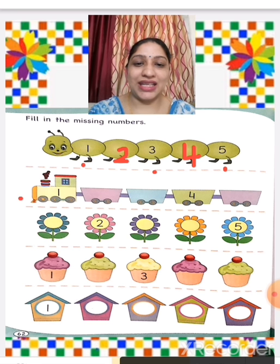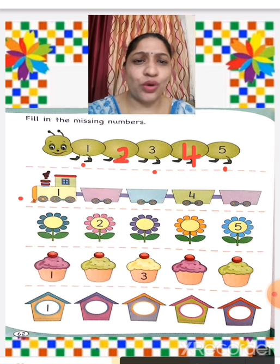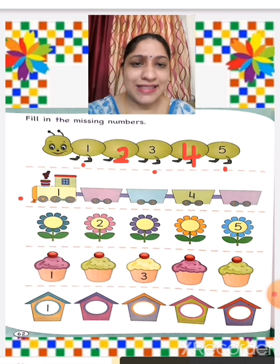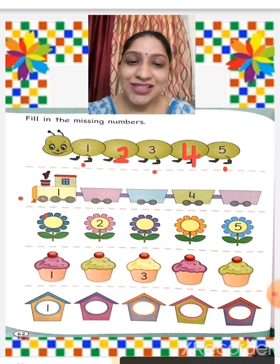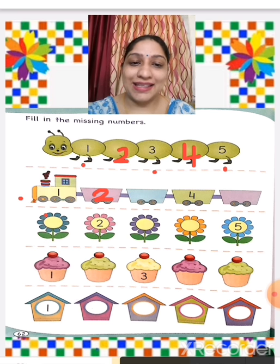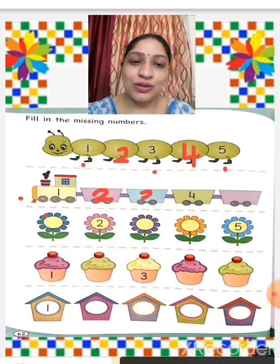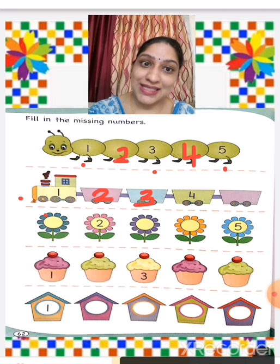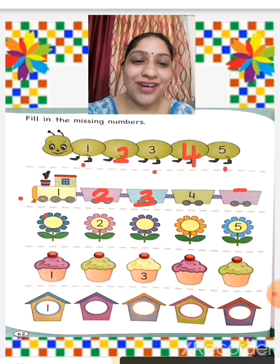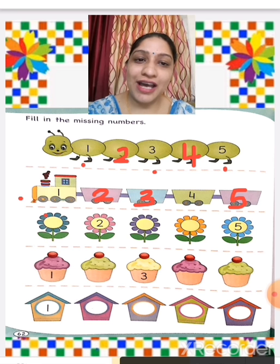We will see the next one — trains. What is missing? 1 is there, 2 is missing so we write 2. Then 3 is missing so we write 3. Then 4 is there, and 5 is missing so we write 5.